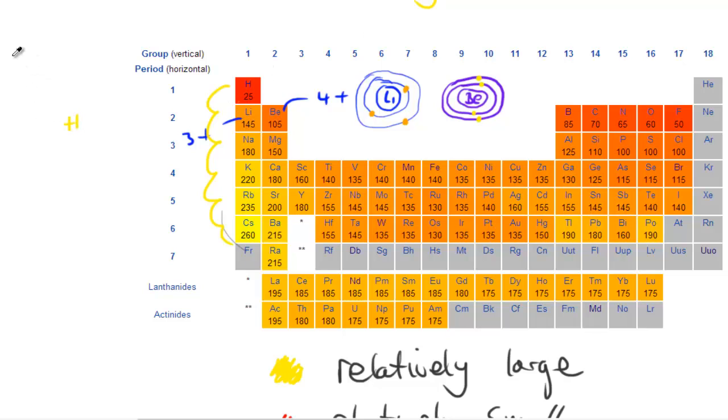So if I was going to go from hydrogen to lithium for example, hydrogen has its nucleus here and it has one shell, whereas lithium has its nucleus here and it has not only one shell but also two shells. Because of its extra shell, the atomic radius is greater.